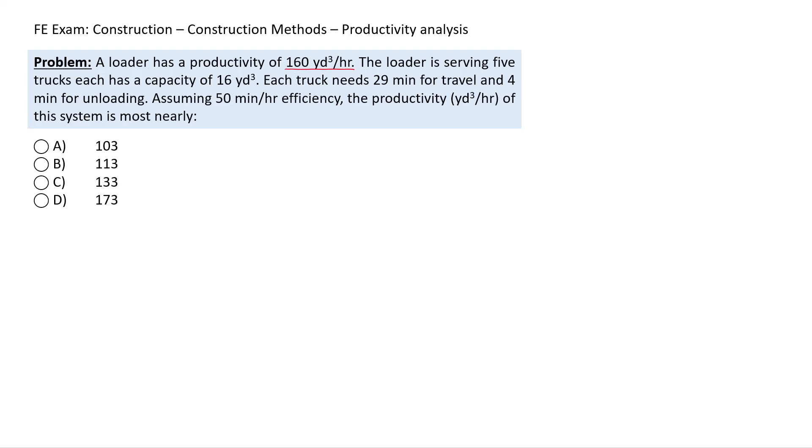So the number of trucks required equals to the cycle of one truck divided by the truck loading time. Now for the truck cycle, the truck cycle is basically the time for loading, travel, and the offloading time.